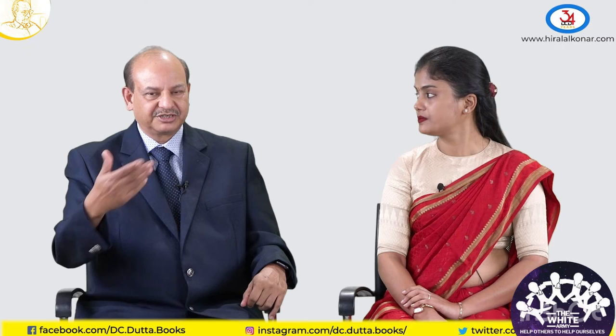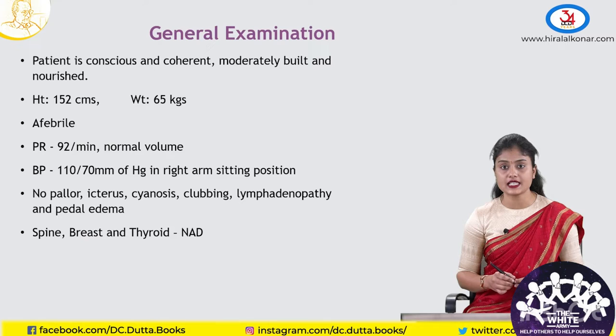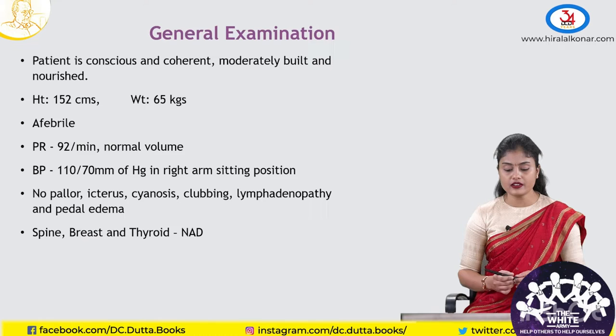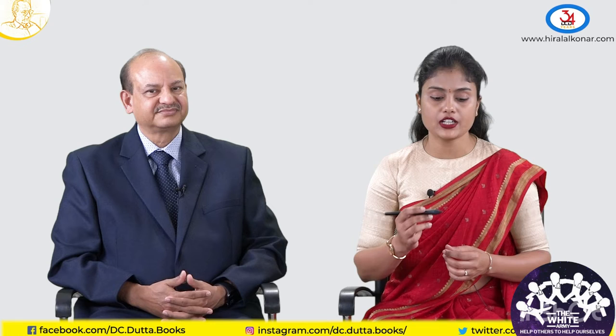We will now move ahead with the examination. Coming to the general physical examination, my patient is conscious, coherent, moderately built and nourished. Her pulse was 92 beats per minute, regular and normal volume. Her blood pressure was 110/70 mmHg in the right arm sitting posture. No pallor, icterus, cyanosis, clubbing, lymphadenopathy, or pedal edema was noted. Her spine, breast, and thyroid were normal. Cardiovascular system and respiratory system were normal with no abnormalities detected.